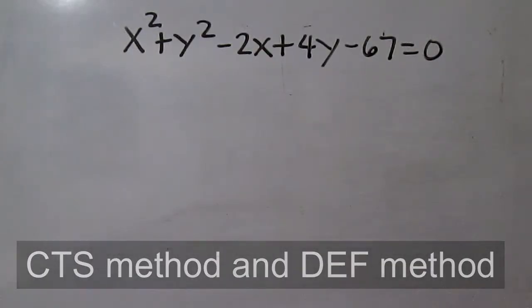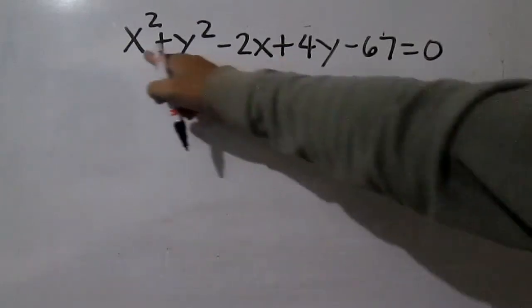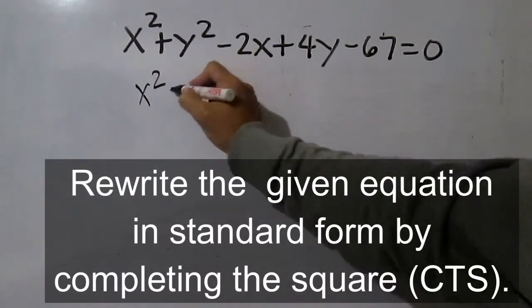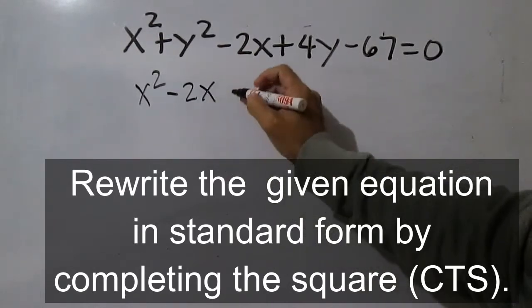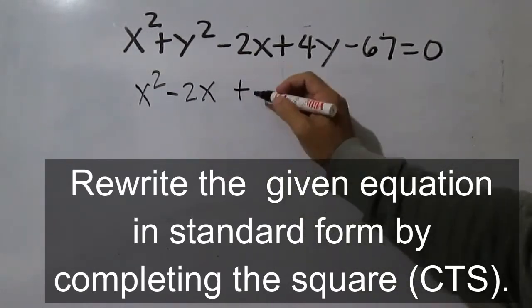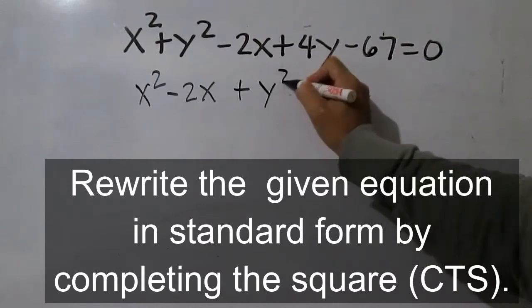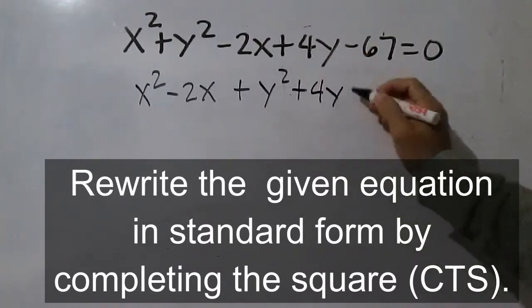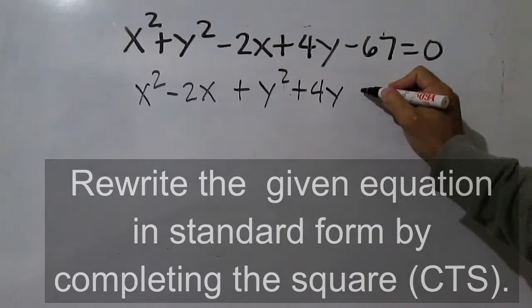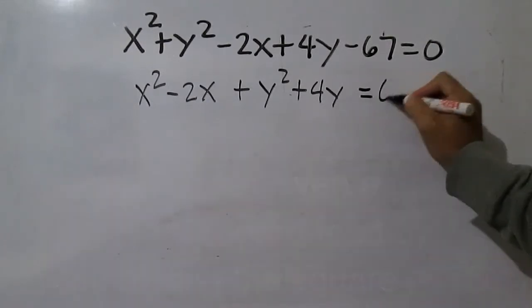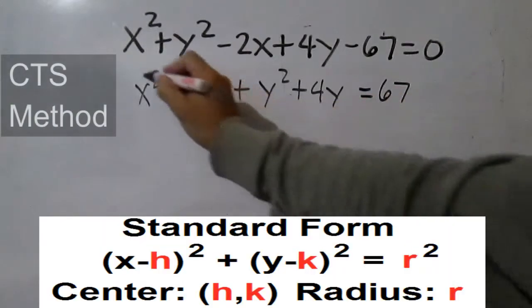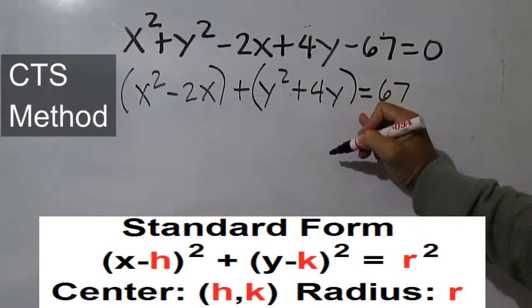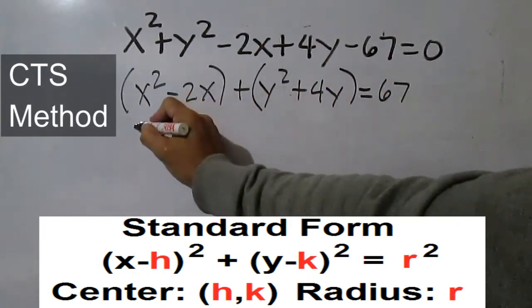Our objective is to write the equation from general form to standard form, group terms with the same variables, and complete the square.